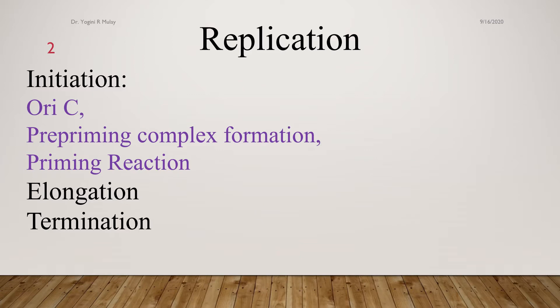What is replication? Replication is nothing but making the exact copy of DNA. Replication is mainly divided into three steps: initiation, elongation, and termination. In initiation, I will be covering the structure of OriC, pre-priming complex formation, and priming reaction.